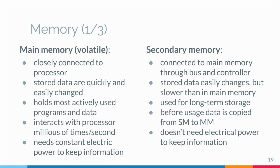The main characteristics of secondary memory are: it is connected to main memory through the bus and the controller; data can be stored and changed, but changes are slow compared to main memory; it is used for long-term storage of programs and data; and before data and programs can be used, they must be copied from secondary memory into main memory.